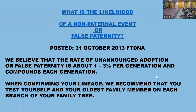What is the likelihood of non-paternal events or false paternity? Everyone who takes the DNA test needs to be aware that is always a possibility. This was posted in 2013 on Family Tree DNA's site: we believe the rate of unannounced adoption or false paternity is about one to three percent per generation and compounds each generation. So we like to think our paper tree is 100% accurate, but without DNA proving it, that doesn't make it so. When confirming your lineage, we recommend you test yourself and your oldest member on each branch of your tree. That is extremely important because it allows you to go back another generation — like a sixth generation if you test a parent, aunt, or uncle.